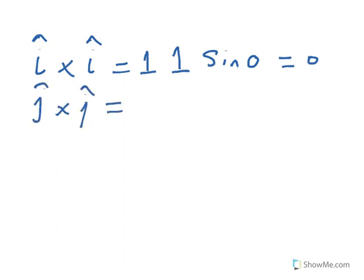See, this is unlike the dot product where i dot i was equal to 1 or j dot j was equal to 1 and so on.